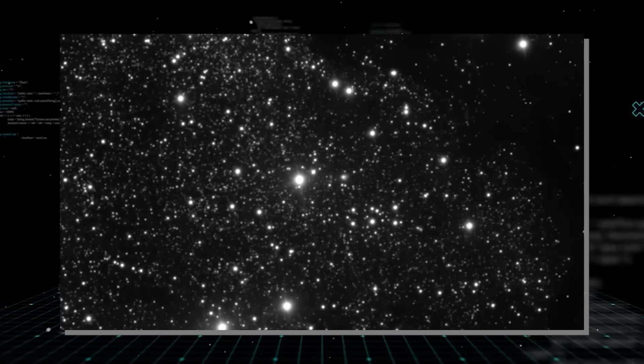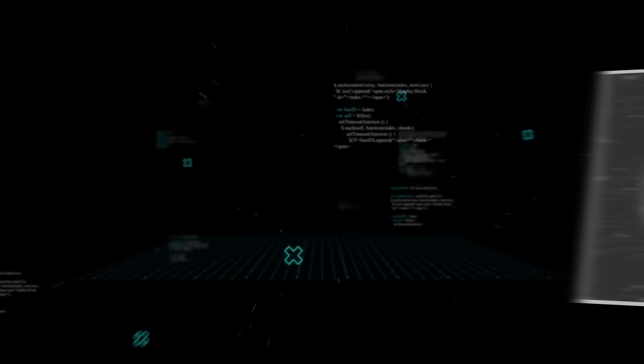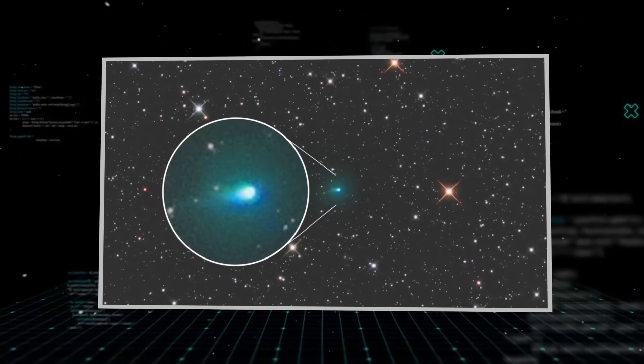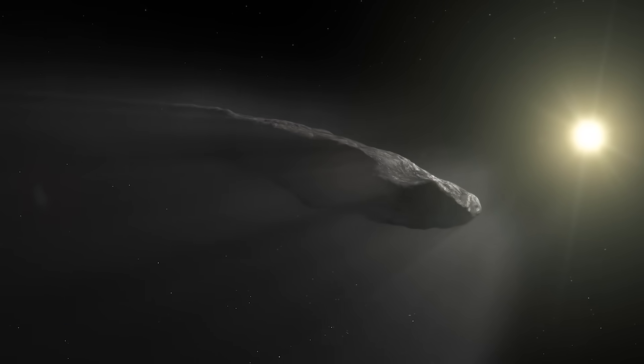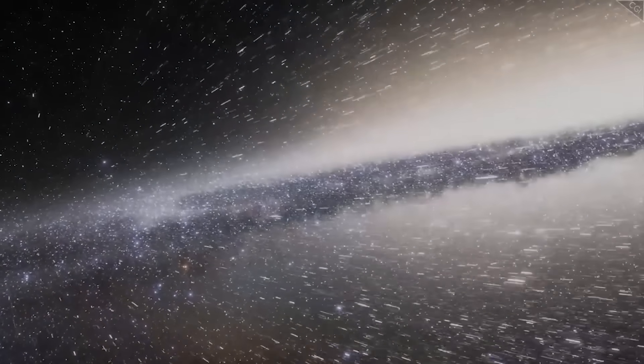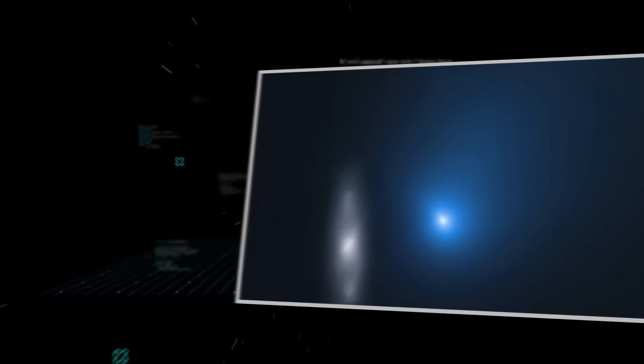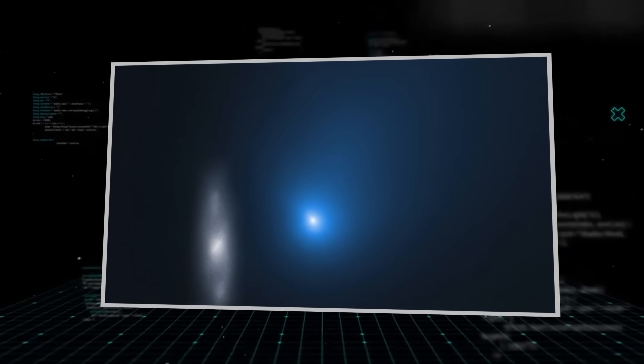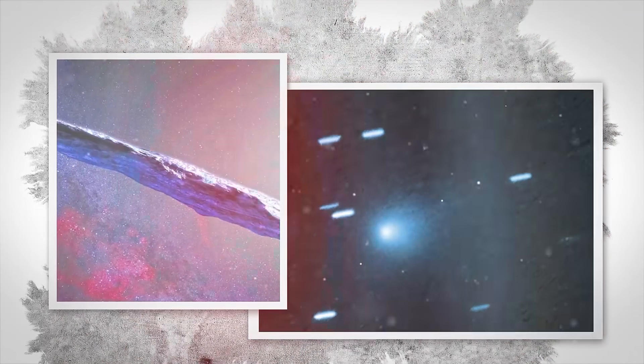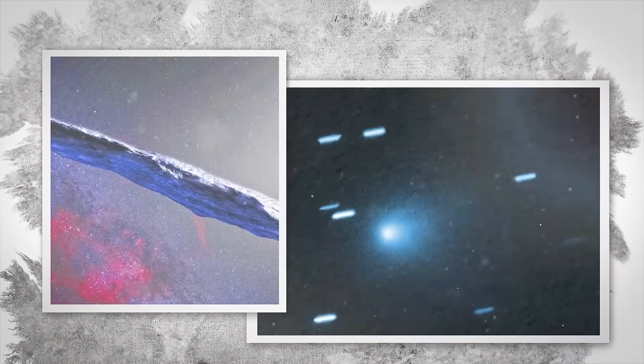This isn't the first interstellar object to visit our solar system, but 3I Atlas is behaving far more unusually than its predecessors. The first, Oumuamua, discovered in 2017, intrigued everyone with its cigar-like shape and mysterious acceleration, appearing to be propelled by something other than just sunlight, though no visible gas or dust cloud was seen. Then came Borisov in 2019, a more textbook comet in appearance, yet its speed confirmed its origin from another star system. Both of these broke some rules, challenging our models, but they still retained fragments of familiar cosmic behavior.